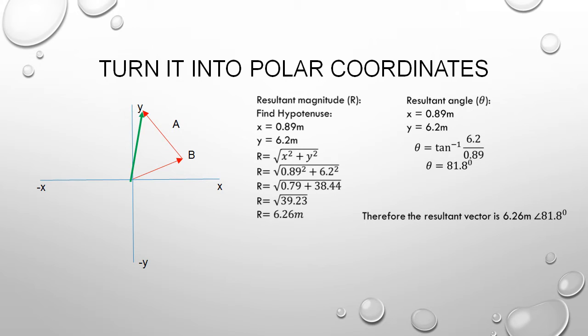Our resultant, if you substitute all of the numbers, you would get 6.26 meters, and a resultant angle, once you substitute all of the values in the formula, you would get 81.8 degrees.